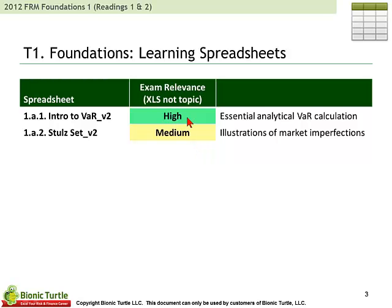I like to color code the spreadsheets because not everyone has time to look through all of them. In this case, the Intro to VAR I consider of high significance. It's a workbook with only two worksheets where I've tried to lay out very simply two perspectives on value at risk that are basic and relevant to the FRM. Value at risk is the key risk measure that is thematic in the FRM. I also have a workbook with the set of Stoll's examples, so you can look under the hood and get a concrete understanding of the concepts Stoll's raises.